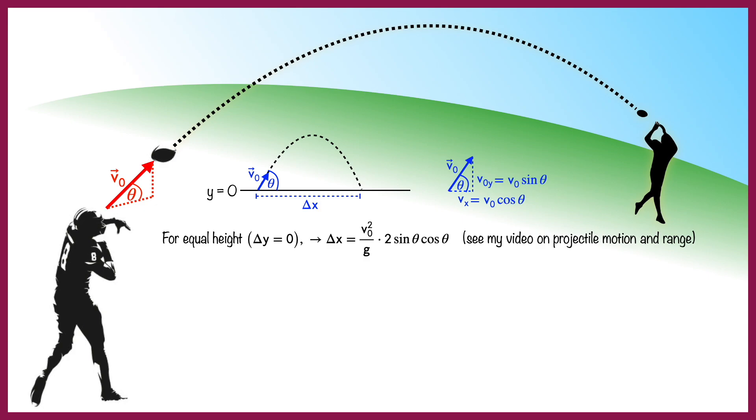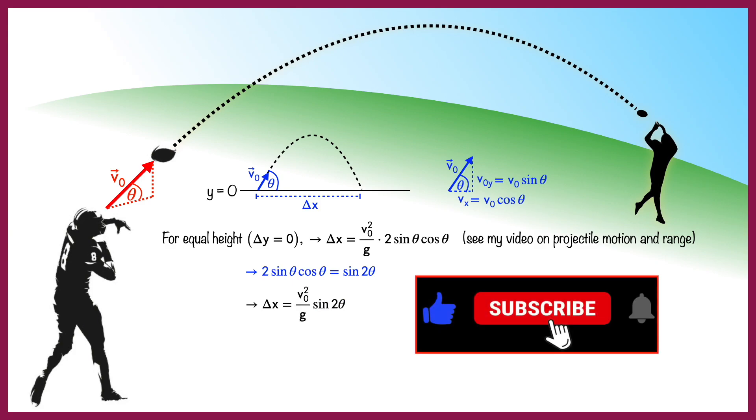Next, I'm going to make use of a useful trig identity which says that 2 sine theta cosine theta equals sine 2 theta. So now our expression for the range is v-naught squared divided by g times sine 2 theta. If you're finding this video interesting so far, be sure to like and subscribe and maybe share it with a couple friends.